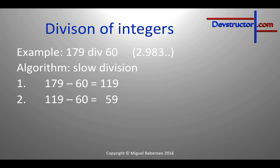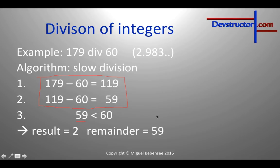At this point the computer will not do a next iteration, because 59 is smaller than 60. What the computer has done is two iterations and has a remainder of 59. So the result is 2 and the remainder is 59.